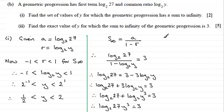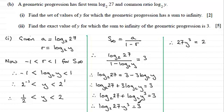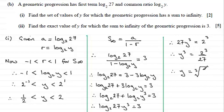Now we have one log term so we can anti-log: 27y cubed must equal 2 raised to the power 3, which is 8. Dividing both sides by 27 gives y cubed equals 2 cubed divided by 27. Taking the cube root of both sides, the cube root of 2 cubed is 2 and the cube root of 27 is 3, so therefore y equals two thirds.